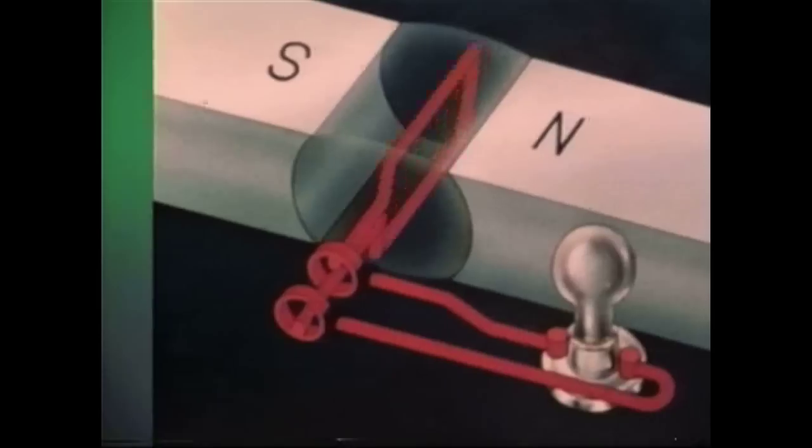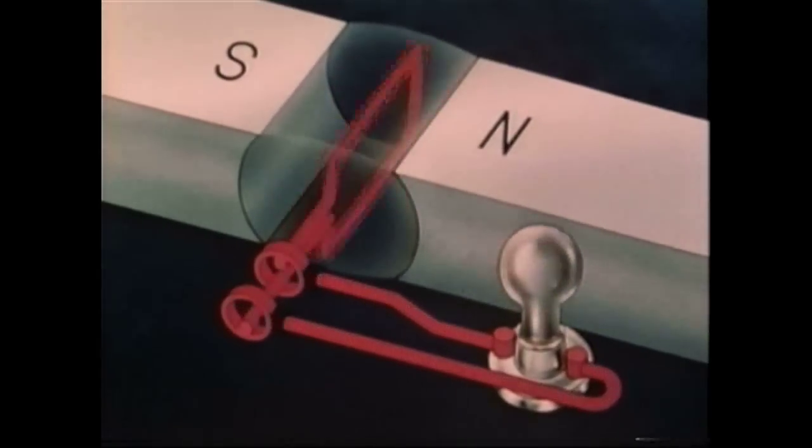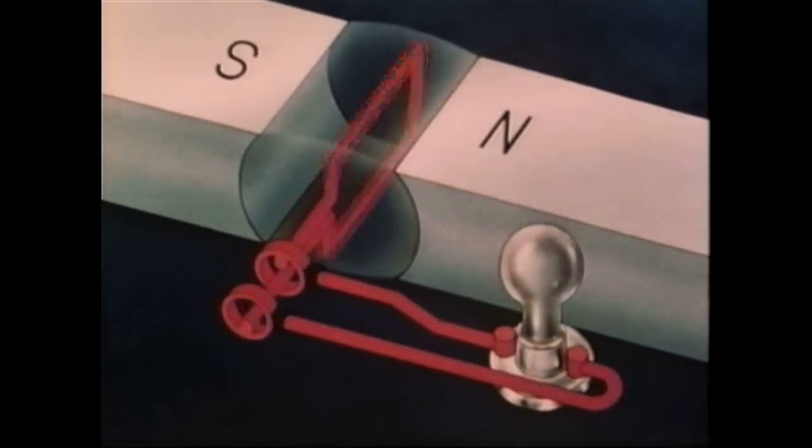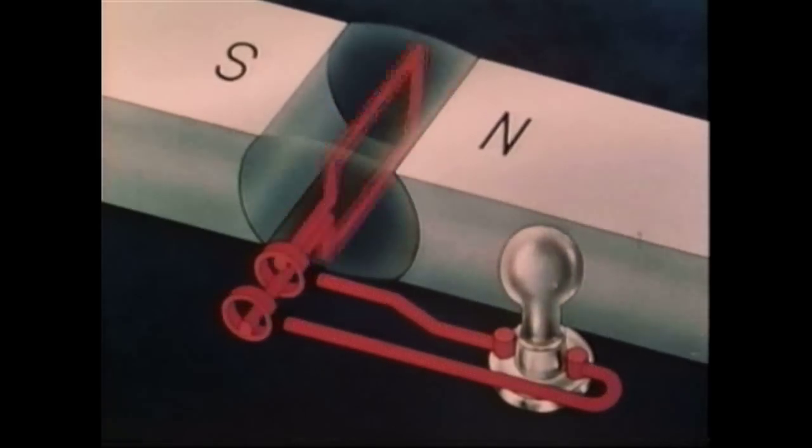So how can we construct a source of direct current? Obviously, we must find a way to maintain current flow in one direction in the external circuit.